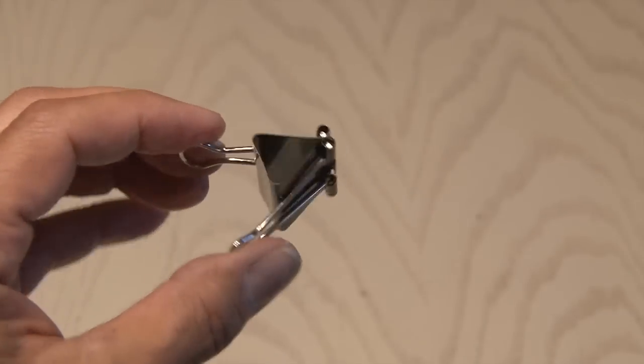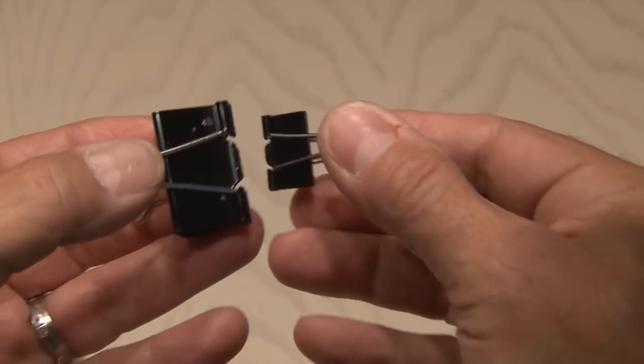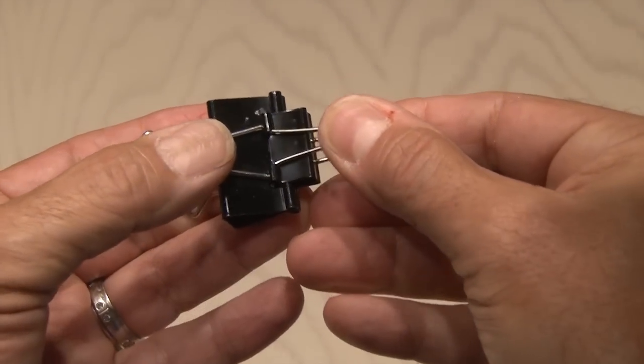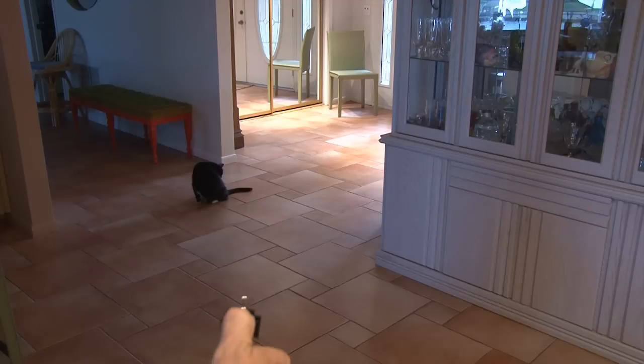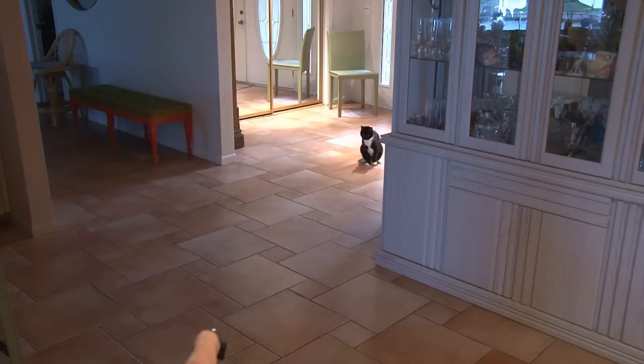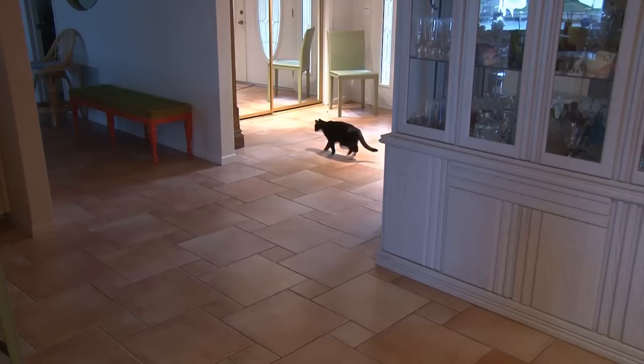This next one uses two binder clips as well. A larger one and a small one. This time, the small one bites the big one, right in the front. Squeeze the clasps of the larger one, and you've made a double clip launcher. Your cat will get a kick out of it. Post a video of your cat playing with one.